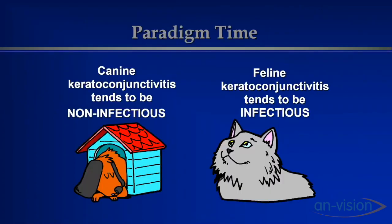My paradigm when going into the exam room: if it's a dog with keratitis or conjunctivitis, I'm going in assuming it's non-infectious, carefully looking for non-infectious, degenerative, breed-related, or autoimmune causes. When I go in with a cat, I'm still thinking about those — dry eye, entropion, foreign body — but failing to find them, I fall back on it being almost certainly infectious. So my mind shift is: infectious until proven otherwise in cats, non-infectious until proven otherwise in dogs.